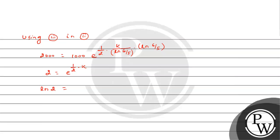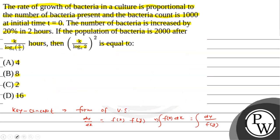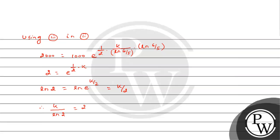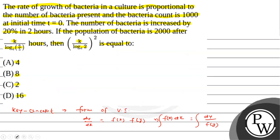From ln(2) = k/2, we get k/ln(2) = 2, and therefore k/ln(2) whole square equals 4. This is the required answer of the given question. Seeing the options, option A is the right answer. Hope you understood it well.